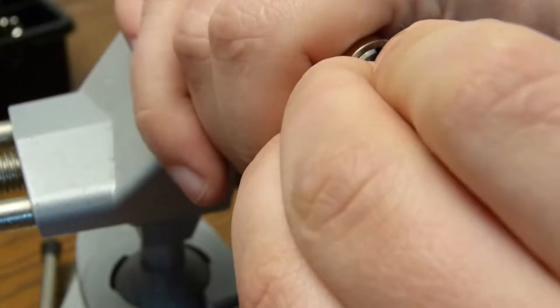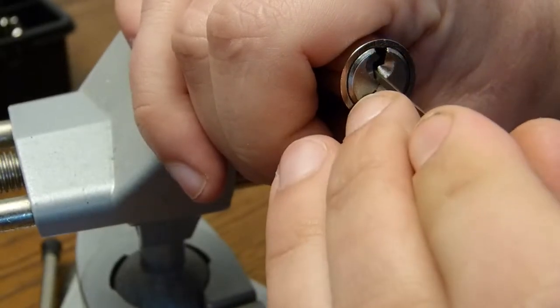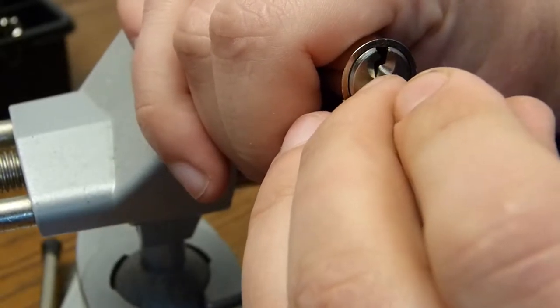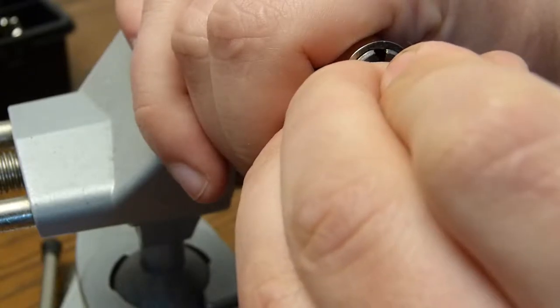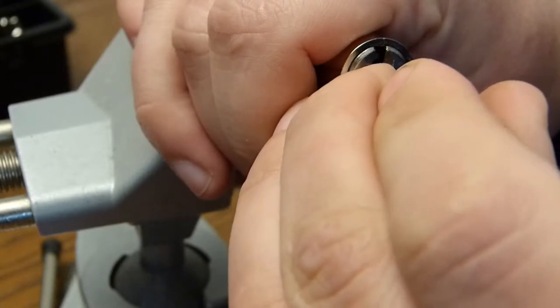These locks are full of serrated pins and key pins are also T pins or spool pins. So when you're over-setting them, it's quite a funny lock.